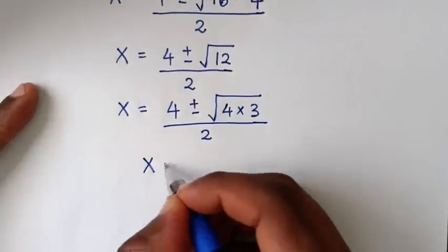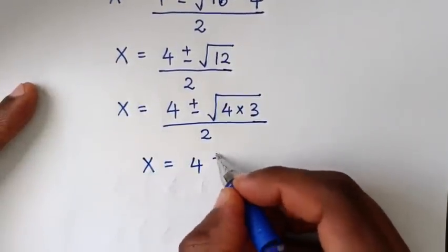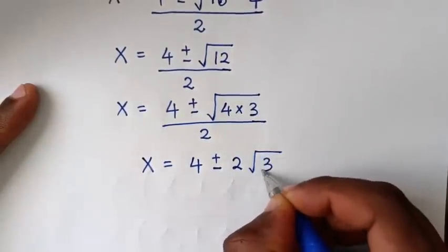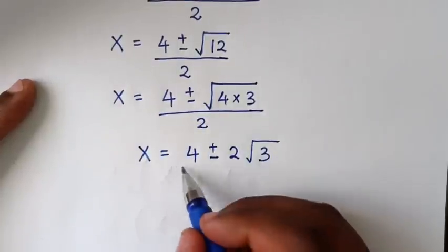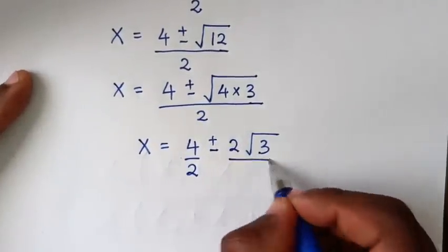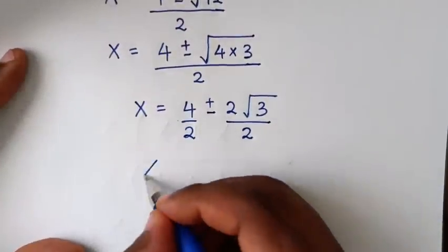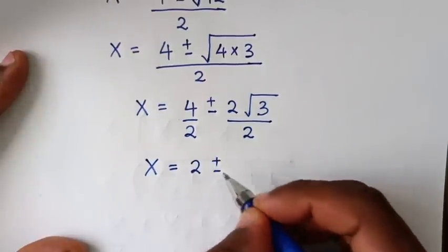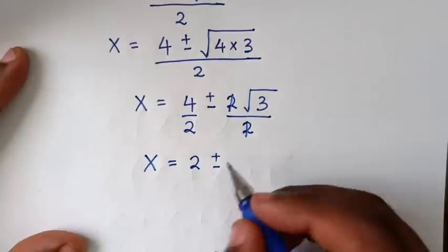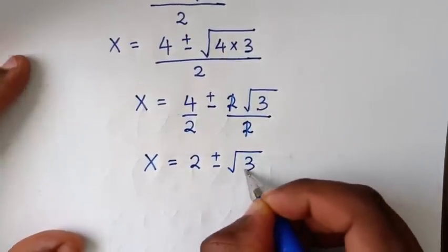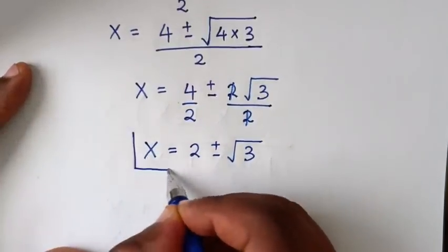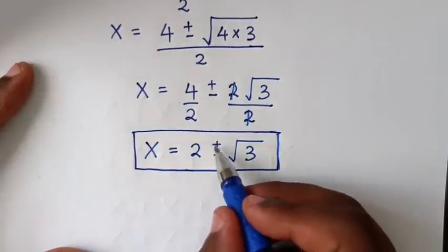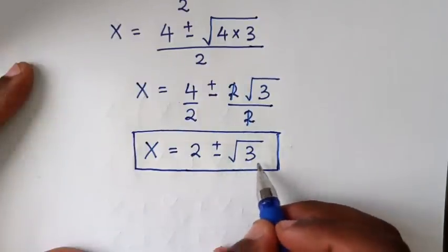Dividing both terms by 2: x = 4/2 ± 2√3/2 = 2 ± √3. Therefore we have two solutions: x = 2 + √3 and x = 2 − √3.